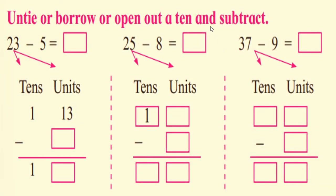Dear children, here are problems from your textbook: untie, borrow, or open out a ten and subtract. First: 23 minus 5 equals how much? In the unit place we write 13, and minus 5 is given. 13 minus 5 equals 8. So 23 minus 5 is equal to 18.